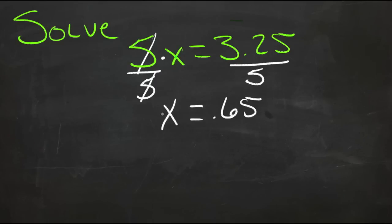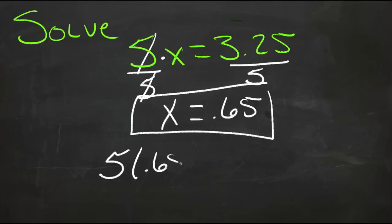So now x is by itself on one side and it's equal to a single number on the right hand side, so we have our value. We can check that by putting it back in place of x. 5 times .65 equals 3.25, and that's correct, so our answer x equals .65 is correct.